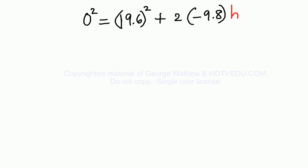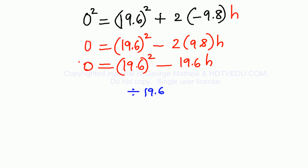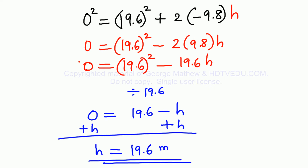Let us do the algebra. We have an unknown H, so we solve for H. This gives us: 0 equals 19.6 squared minus 2 times 9.8 times H, which simplifies to 19.6 squared minus 19.6H. Dividing throughout by 19.6: 0 equals 19.6 minus H. Therefore H equals 19.6 meters.